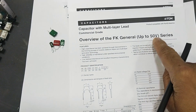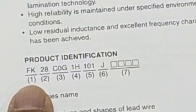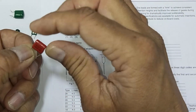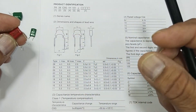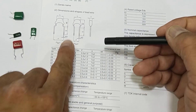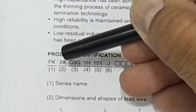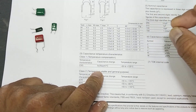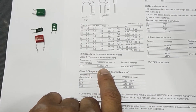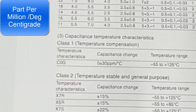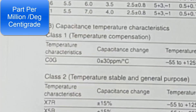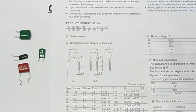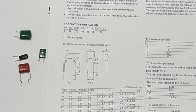The first part of the part number is FK — that is the series name. The next two digits, 28, encode the dimensions: height, width, length, lead type, lead length, and lead diameter — everything is in that second two-digit code. Then comes number three, which is the temperature classification — how much the capacitance value changes, for example plus or minus 30 ppm per degree centigrade.